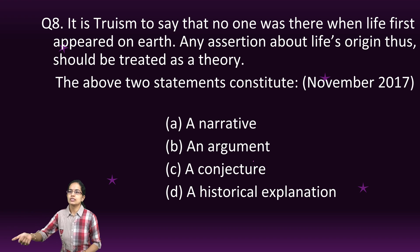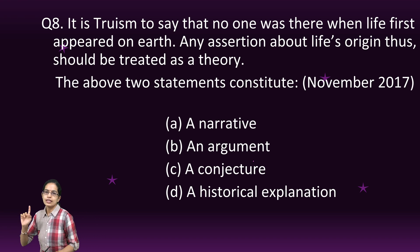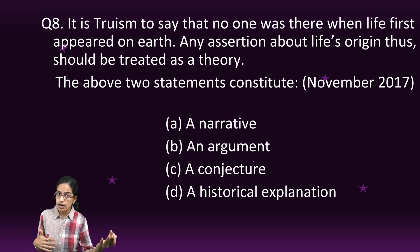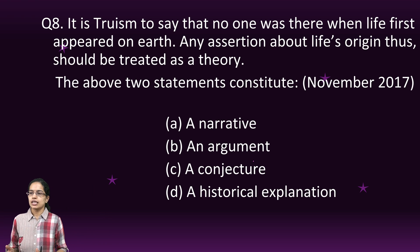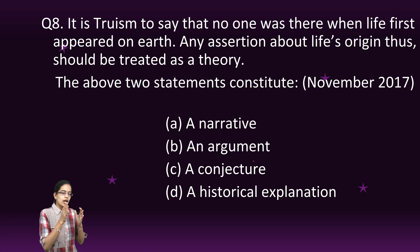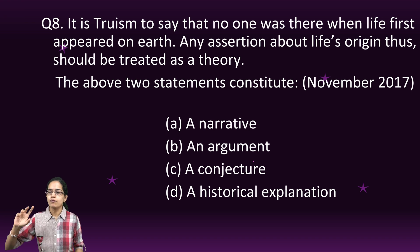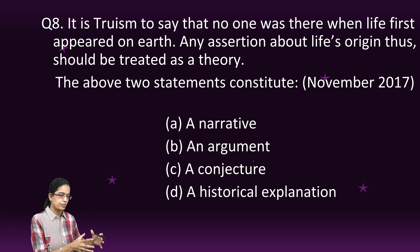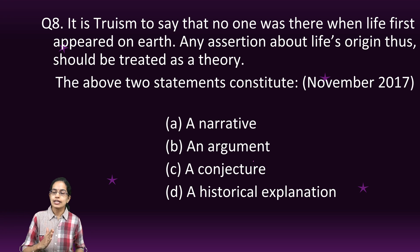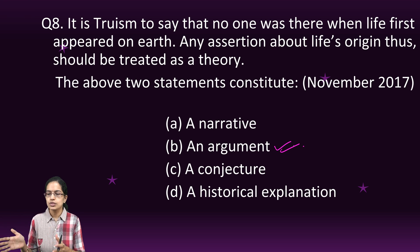The next question: 'It is a truism to say that no one was there when life first appeared on earth.' What I am trying to do here is make a conjecture and assumption. But the second statement says that any assertion about life's origin should be treated as theory. So an argument is made here in support of the first statement, and therefore the two statements together constitute an argument, because in an argument we are trying to say whether the conjecture is true or false. We would be covering terms like argument, conjecture, and truism in more detail in upcoming lectures.